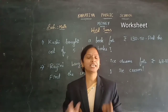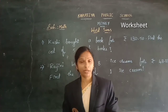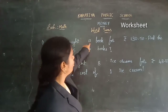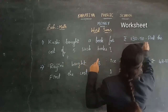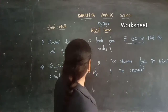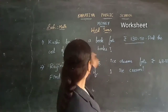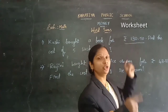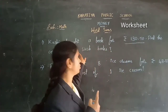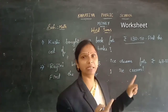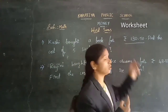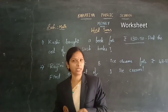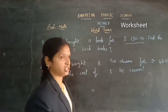Yes children, I hope you understood what I explained in this video. Come on, let's do the worksheet. First problem: Kushi bought a book for 30 rupees 50 paise. Find the cost of 5 such books. A book means 1 book cost is given — you need to find out the 5 books cost. 1 thing cost we know and more things we are finding — so you need to do multiplication.